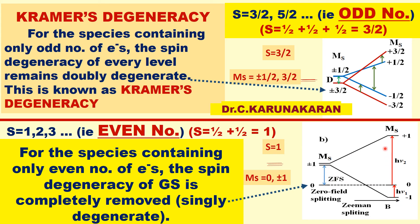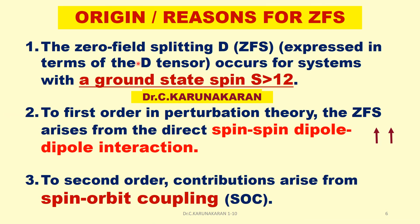For species containing even number of unpaired electrons, the spin degeneracy of the ground state is completely removed and is singly degenerate. Using the EPR selection rule delta ms equal to plus or minus 1, there are two allowed transitions, giving two peaks observed in the EPR spectrum.